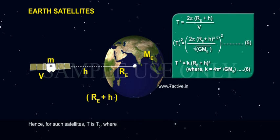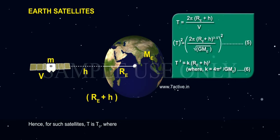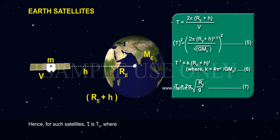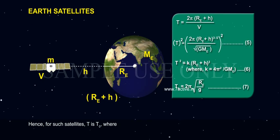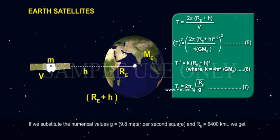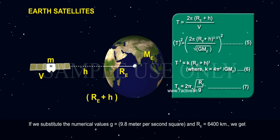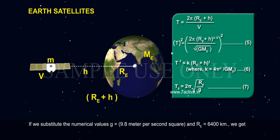Hence, for such satellites, T is T₀, where T₀ equals 2π times the square root of RE divided by g, Equation 7. If we substitute the numerical values g equals 9.8 m per second squared and RE equals 6,400 km, we get: